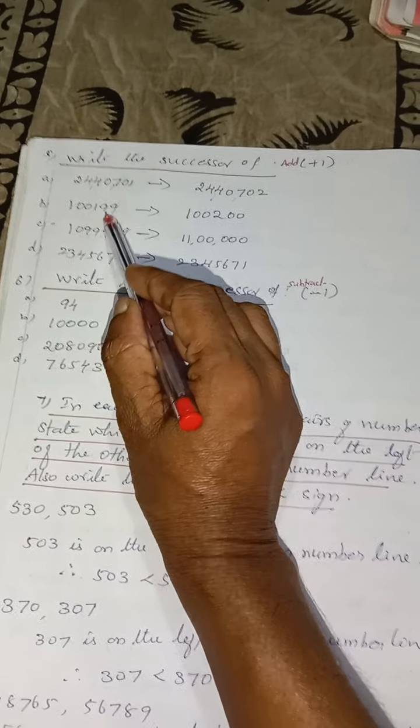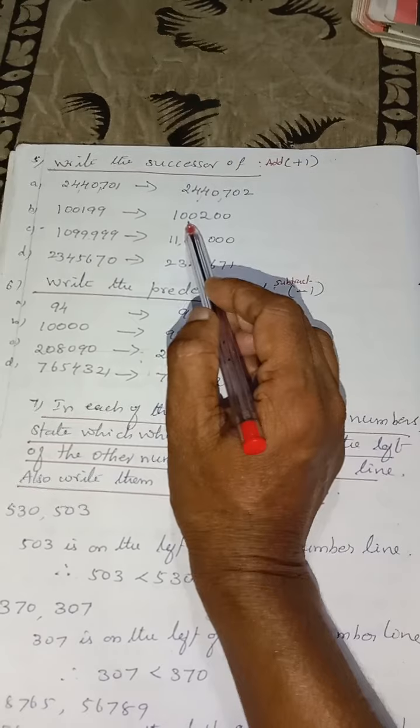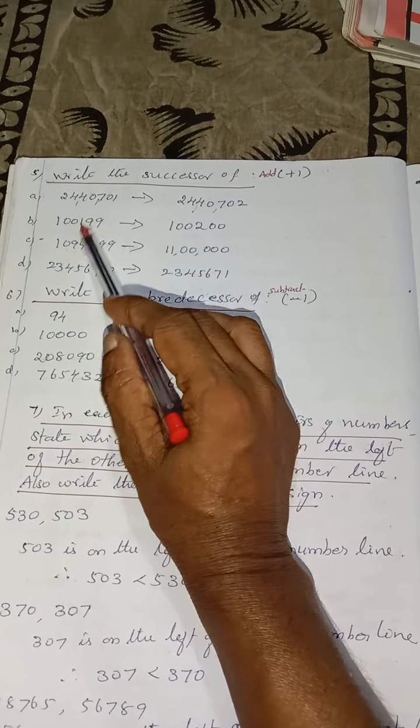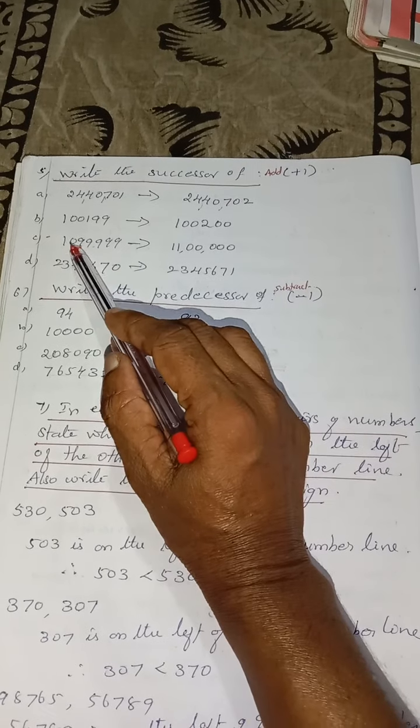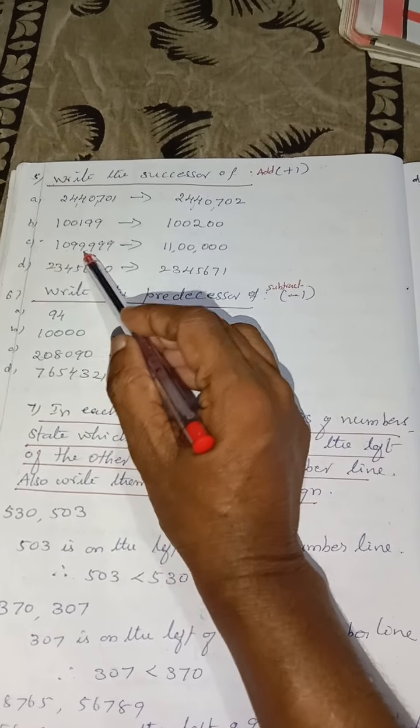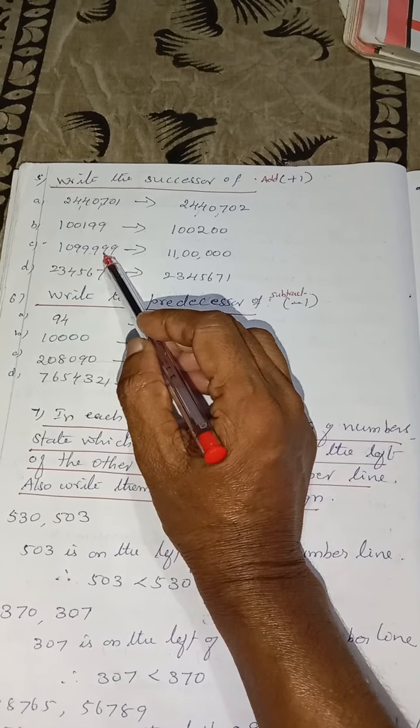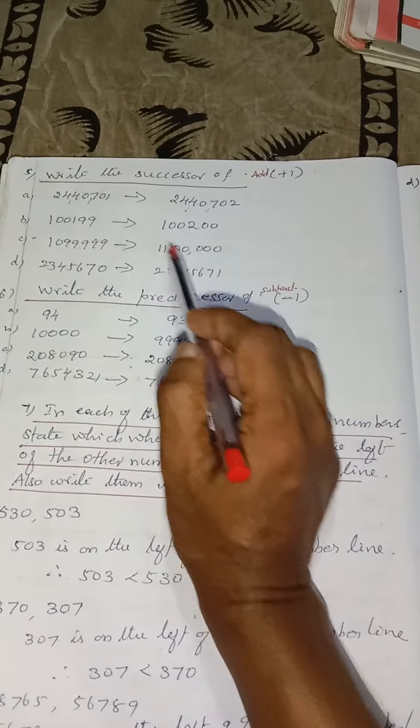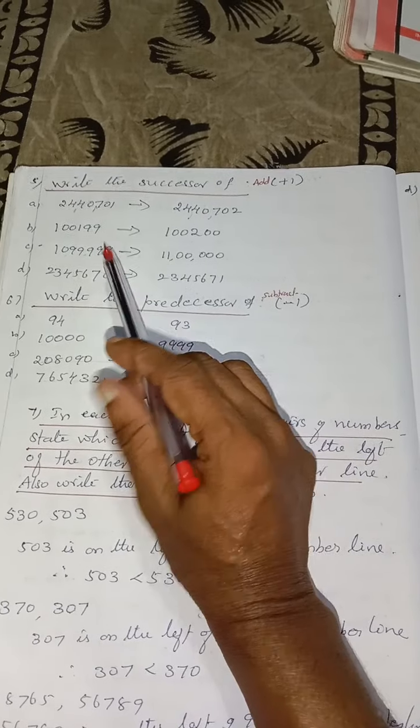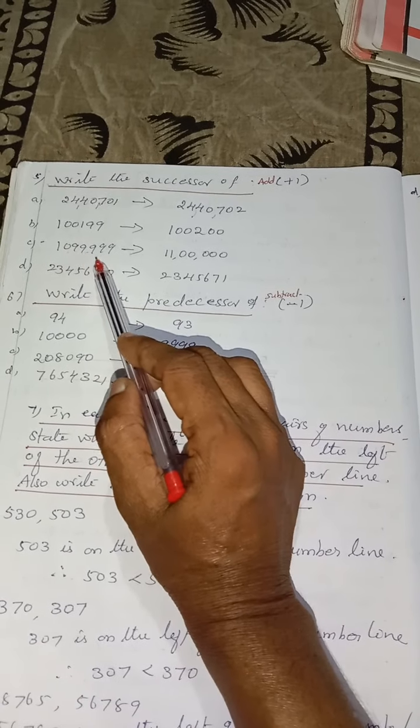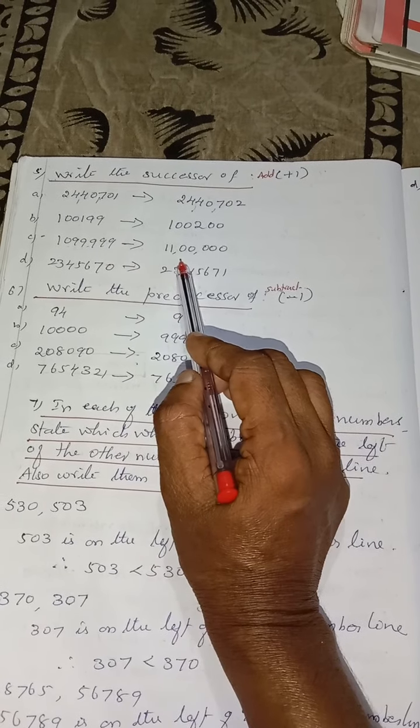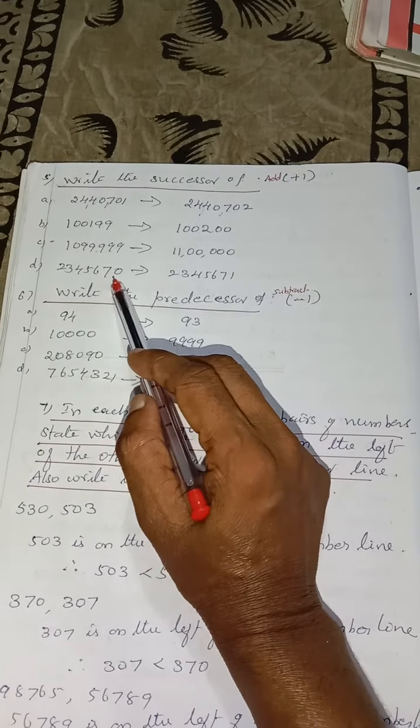Then successor of this one. 1,199. So the successor is 1,200. 199, next number is 200. And here 10,99,999. Next number is 11,00... because 10,99,999. If we add 1 to this, we will be getting 11,000.